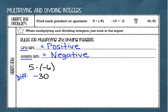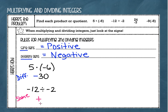Our next example is negative 12 divided by negative 2. I'm going to look at my signs and ask myself: are they the same or are they different? I've got two negatives, so that means they're the same. Because they're the same, my answer is going to be positive. It doesn't matter that they're both negative — it's still going to give me a positive answer. That's the rule: two negatives give me a positive when multiplying or dividing. 12 divided by 2 is 6, so my answer is positive 6.